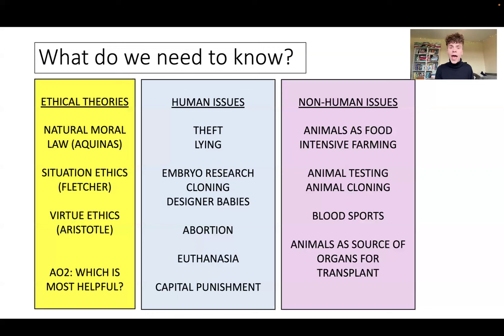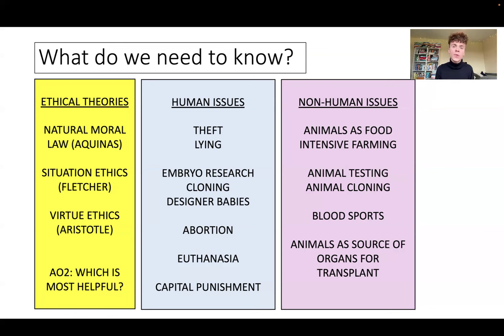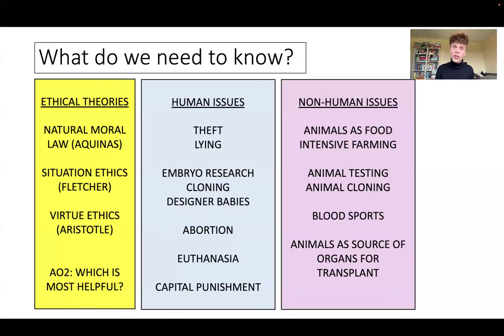The first thing we need to know is our ethical theories. It is so important that you are an expert on natural moral law, situation ethics and virtue ethics. We need to know our AO1 knowledge about each of those ethical theories and the key components of each one. We also need to know our AO2 evaluation points — the strengths and weaknesses for each ethical theory, what's good about it and what criticisms there are.